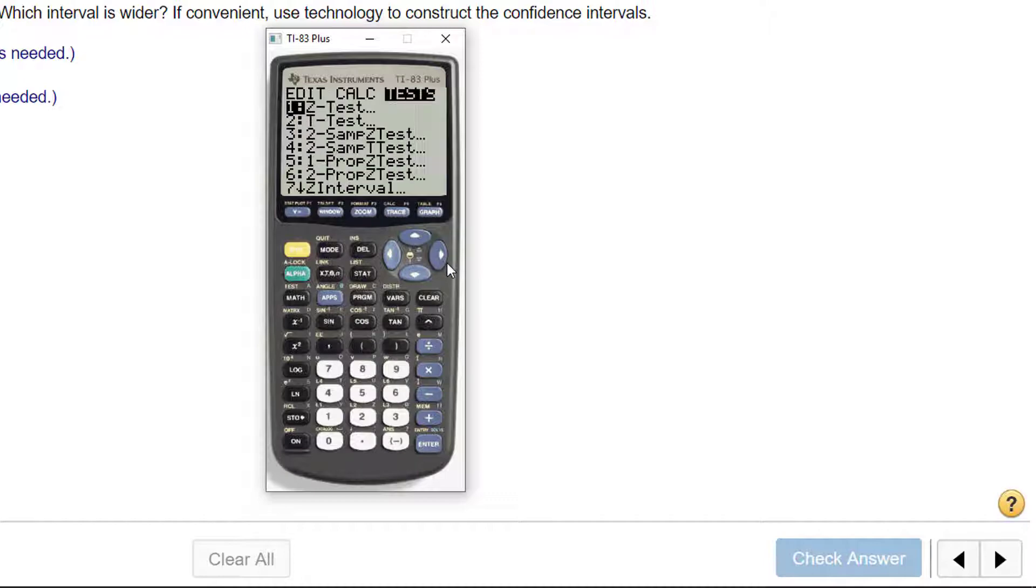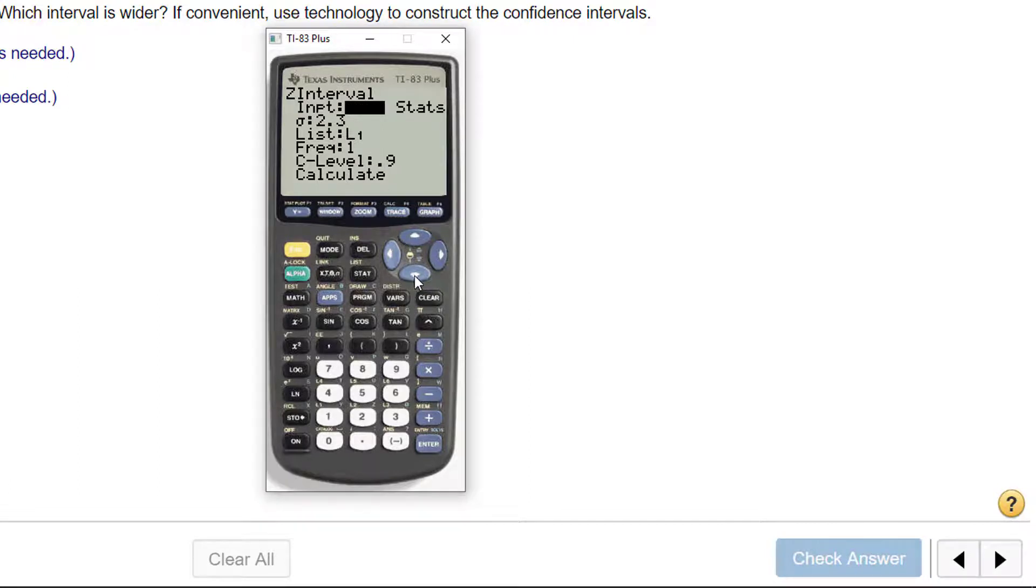I go to stat, test, Z interval. Be sure, because usually the default is stats, be sure you have data because I put my data in. I need to change this to 1.8. Be sure whatever column you put your data in, mine was in the very first column, list one, and I want a ninety percent, so that looks good.